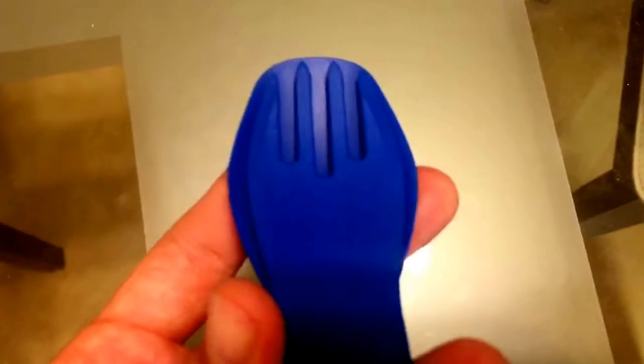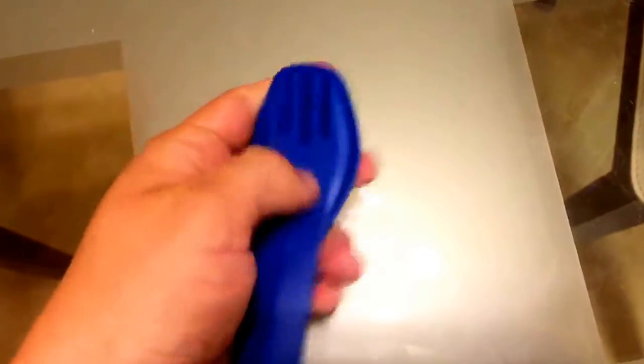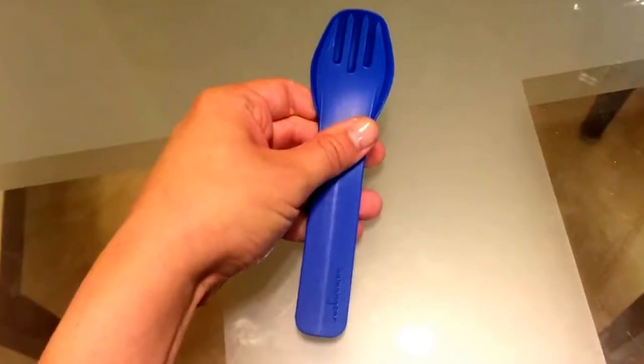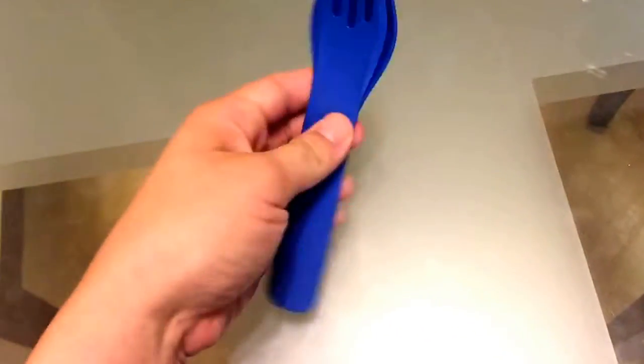And what's kind of nifty about that is I put this in my purse and so the tines of the fork are protected, so they're not going to stab your purse or stab whatever soft things you have in there. It's really easy to remove it.